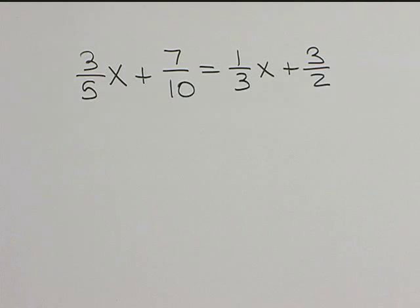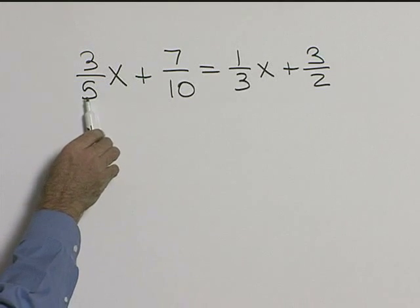Let's solve 3/5 x plus 7/10 equals 1/3 x plus 3/2. First thing we need to do is find out what will clear our fractions.